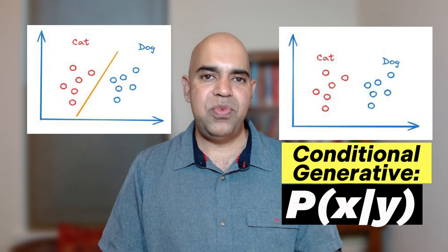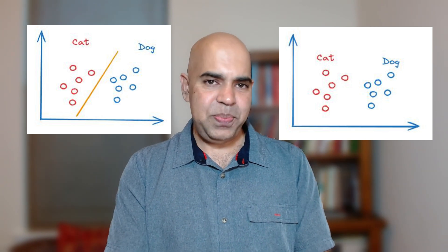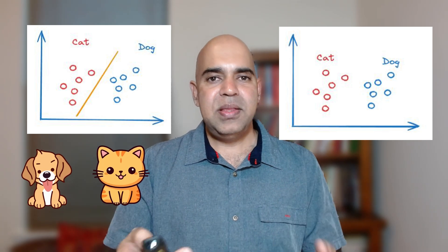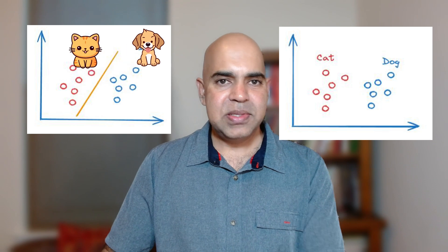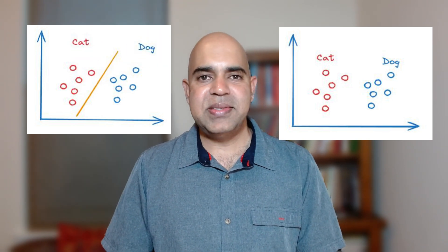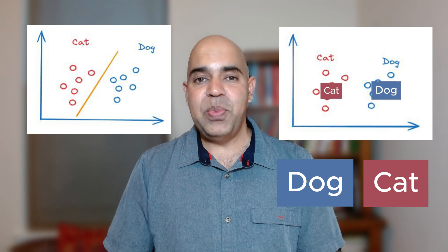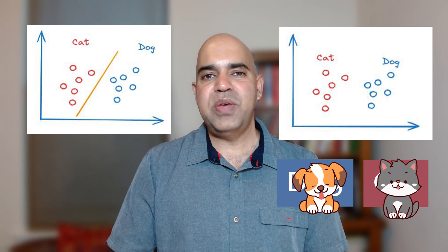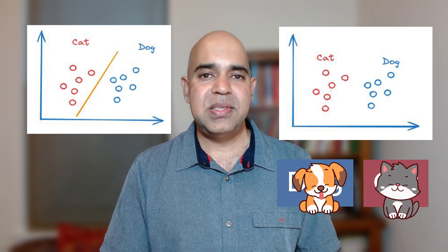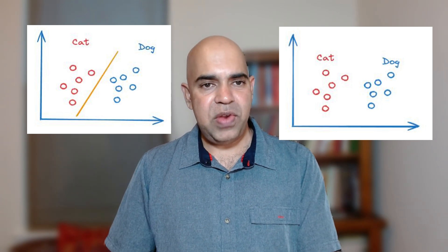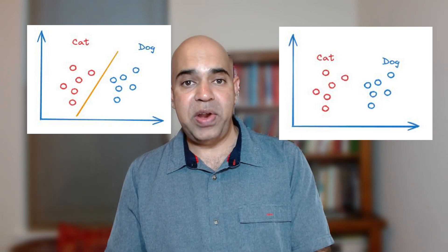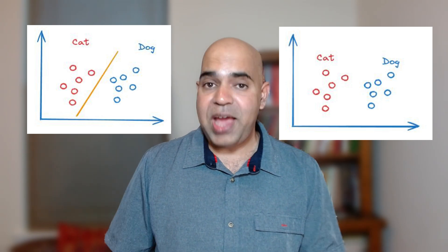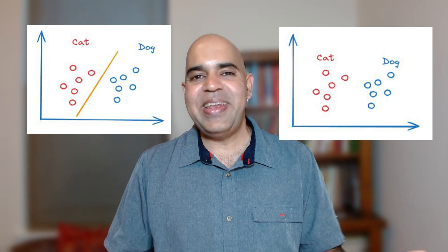As an application of discriminative learning: given data points, the model predicts class labels. As an application of a generative model: given the class label, the model generates a sample of that class. There are many different forms of generative models in practice. Some examples are generative adversarial networks, diffusion models, variational autoencoders, autoregressive models, transformer-based models, adversarial autoencoders, and many others.